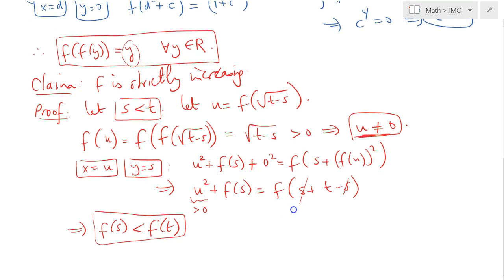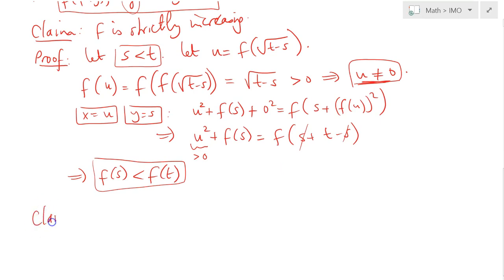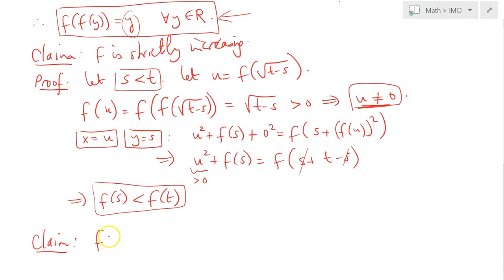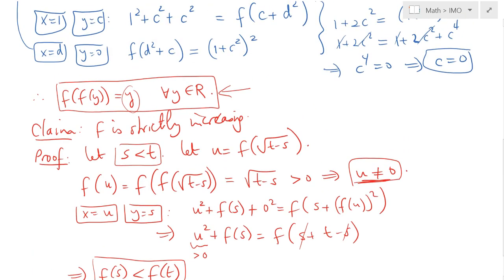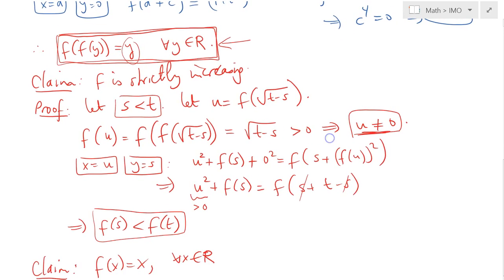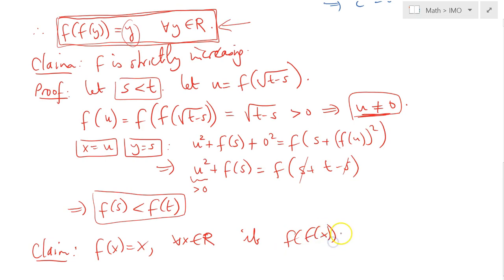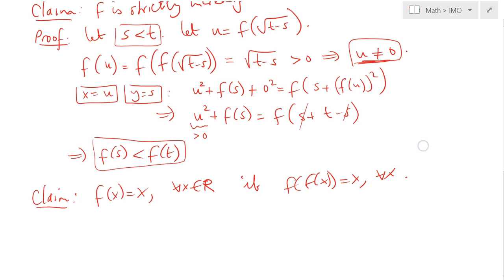Now I make a further claim: the function F that satisfies F of F of y equals y is simply the function F of x equals x for all x in R. The function F, which satisfies the original functional equation, also satisfies this result as a consequence. Any function F which satisfies this result I claim must be F of x equals x.